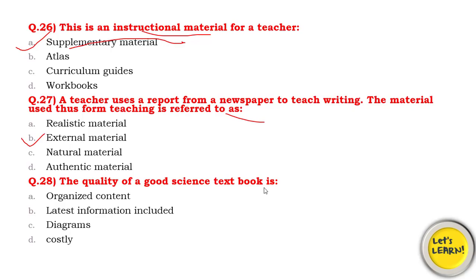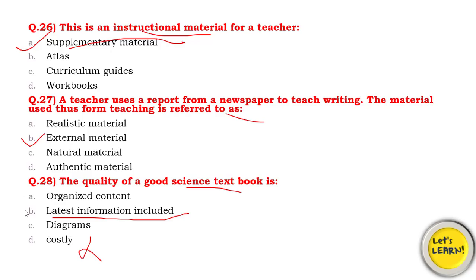Question number 28: What is the quality of a good science textbook? Options include: organized content, latest information is included, good diagrams, or other features. Organized content and good diagrams are positive qualities. But if we focus specifically on science — since science changes constantly, it is not static but dynamic — the most important quality is that the latest information, experiments, and research are included. So the best answer is: latest information is included.